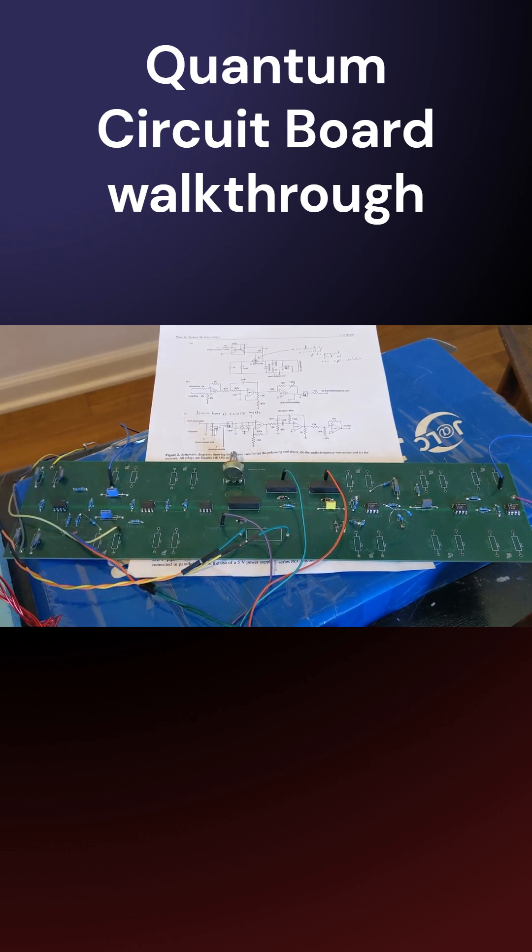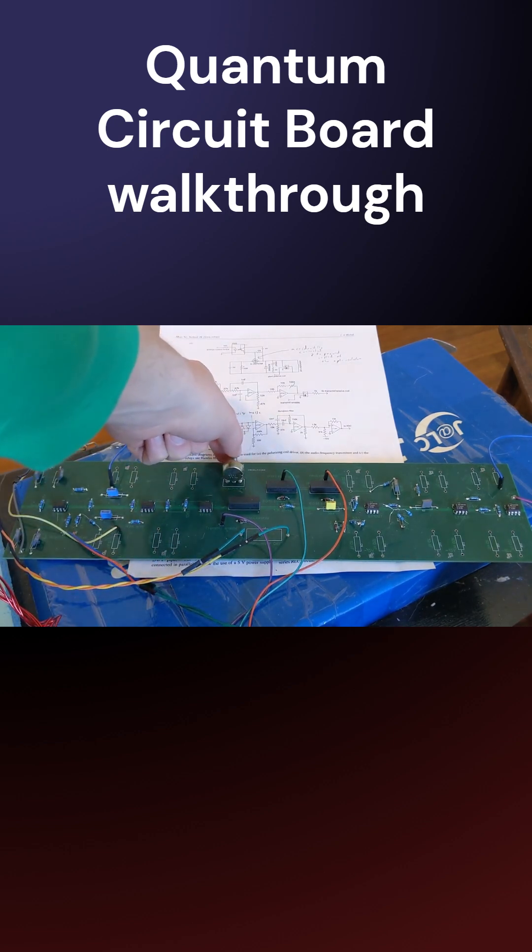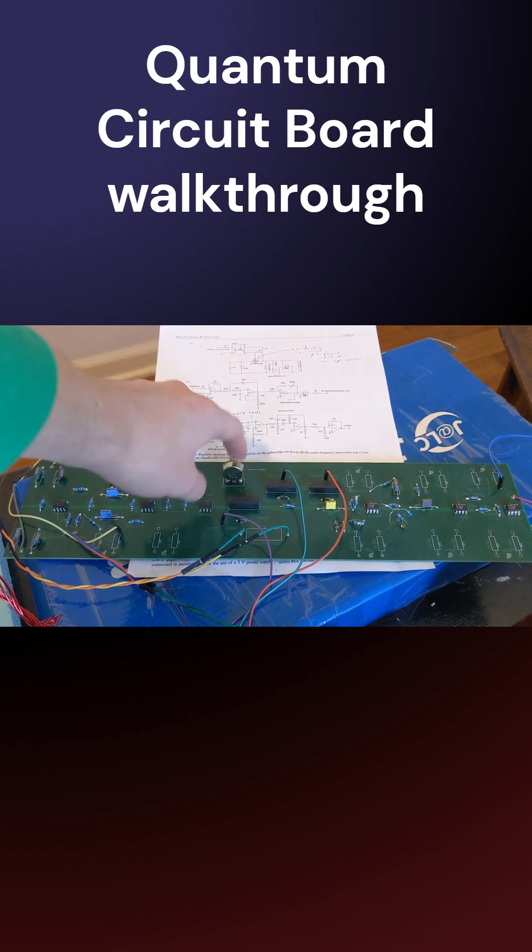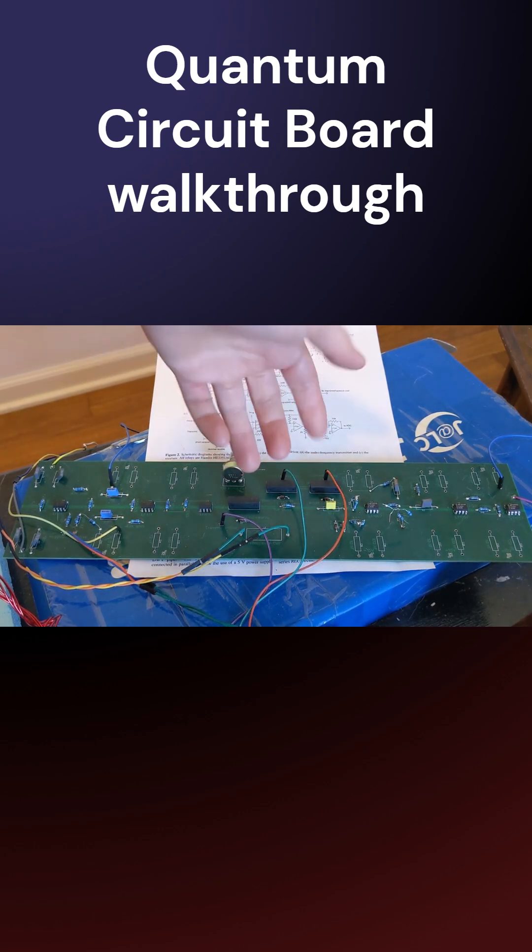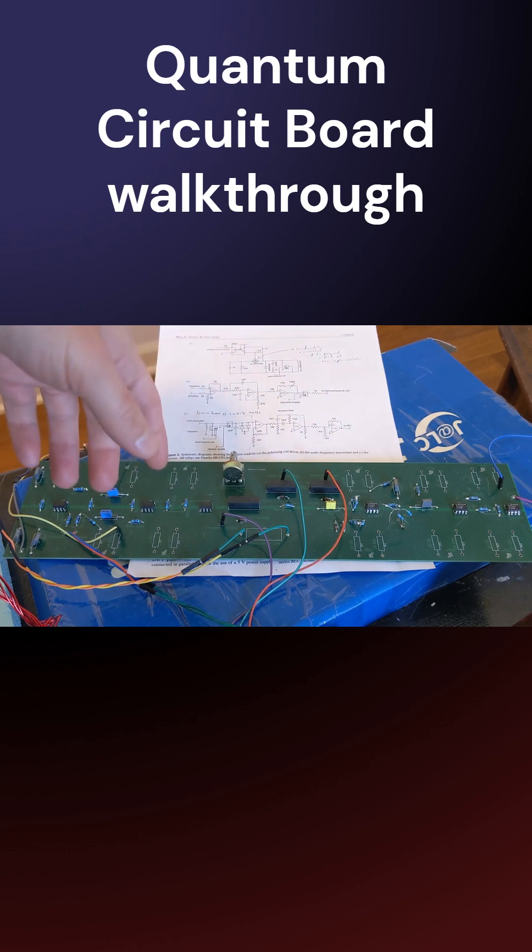The third op amp, with the help of this potentiometer up here, lets us tune how much power we have so we can magnify or reduce the signal. We can tune how much energy we put into our oscillator, into our oscillating nuclei.